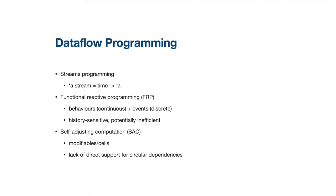Another paradigm is called self-adjusting computation, which does not have the concept of time, but instead provides the abstraction of modifiables, which is similar to a cell in a spreadsheet. SAC sacrifices history sensitivity, but it is efficient to implement. However, self-adjusting computation is intended for incremental computation, so it doesn't have direct support for circular dependencies.